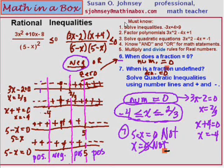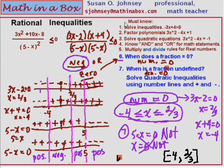Our final answer can also be written in interval notation. It starts at negative 4 — to include negative 4 we use a bracket, then negative 4 comma, going up to two-thirds. Since we also want to include two-thirds, we use a closing bracket. If you did not want to include two-thirds, you would use a parenthesis instead — that would be for a strict inequality. This notation is called interval notation, and the one above is called inequality notation. This is Susan Johnsey with mathinabox.com — if you have any questions, please email me. Thank you.